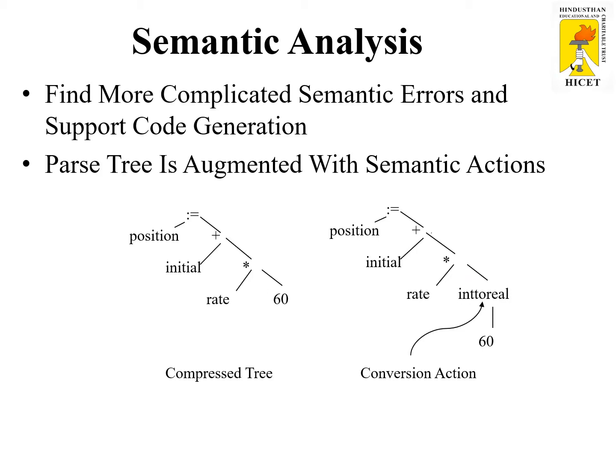The third phase of the compiler is semantic analysis. It finds more complicated semantic errors and supports code generation. The parse tree is augmented with semantic actions. In this image you can see two different types of parse tree — one is the compressed tree and another one is the conversion action. The compressed tree is the input given for semantic analysis and the conversion action is the output after semantic analysis. In this phase, type checking takes place — checking what data type you declared in the program versus what type of data you provide as input. If these two are mismatched, then an error will be triggered.